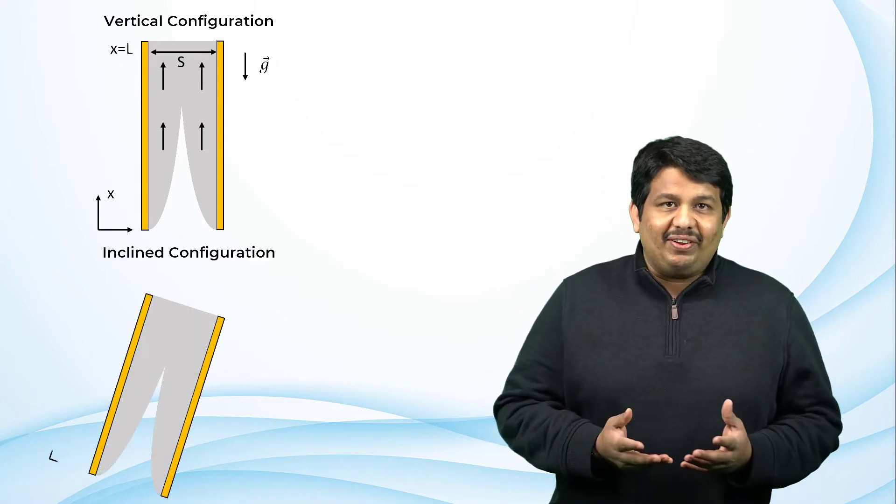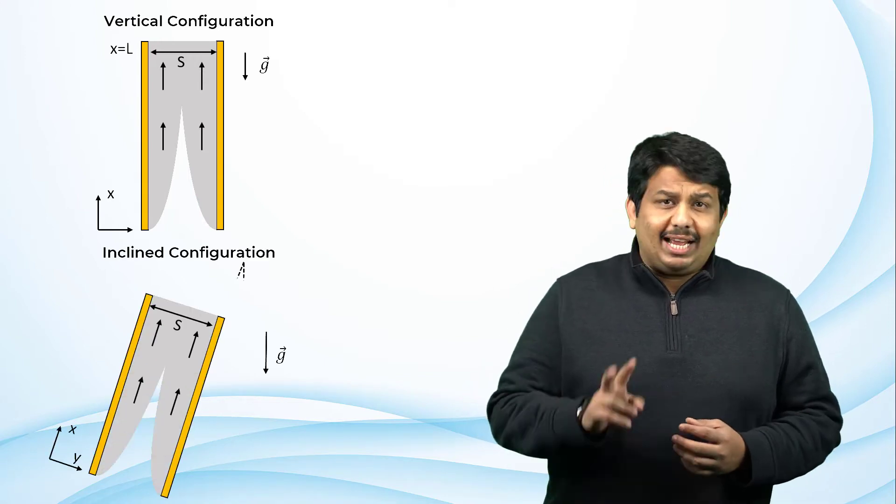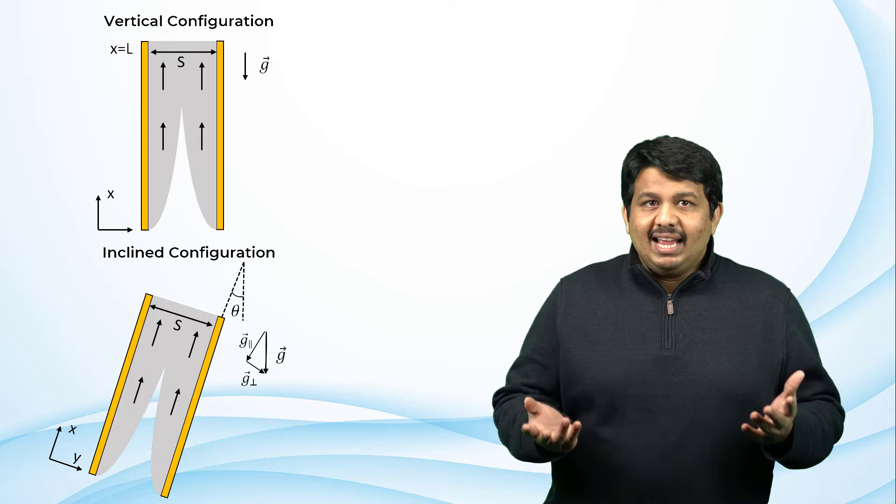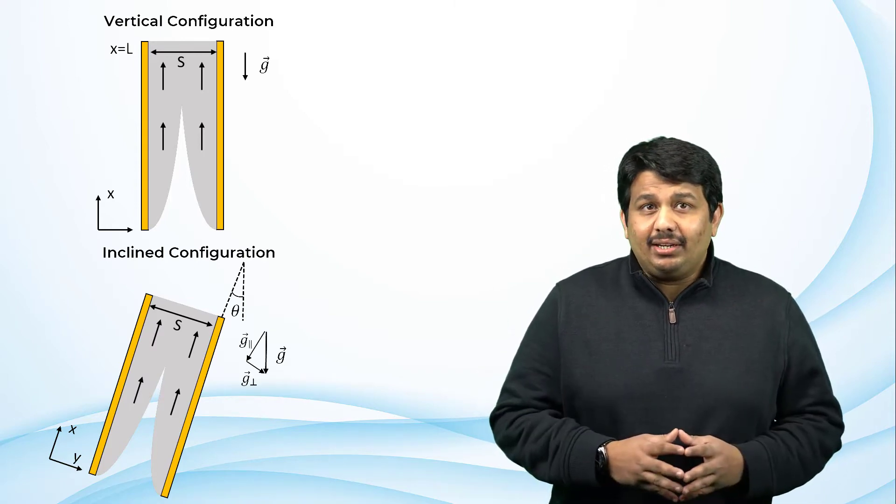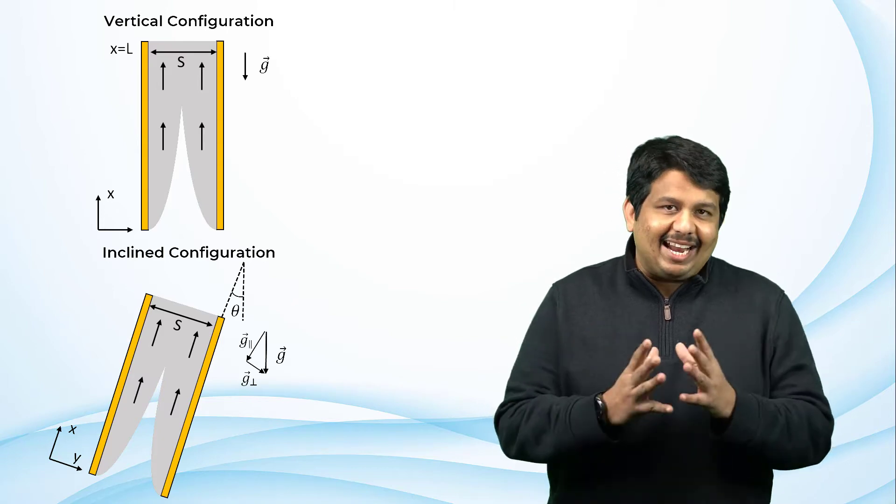In the inclined configuration, buoyancy force has two components, i.e., streamwise and normal to the surface, and as a result, leads to strong secondary flows.